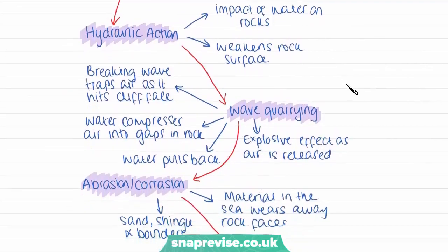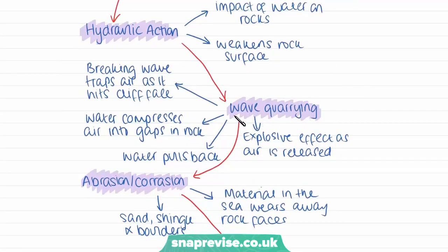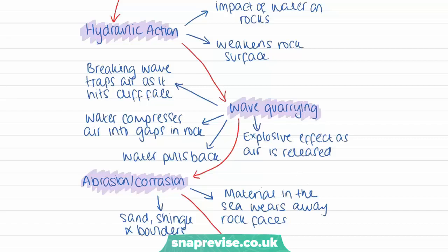Then we have wave quarrying. This is when a breaking wave moves towards a cliff face, air gets trapped in the gaps in the rock, and the wave forces that air into the rock. When the water pulls back, it creates an almost vacuum-like explosive effect as the air is released from within the rock. This explosive effect can weaken the rock itself, causing weathering and the rock to degrade and break down.